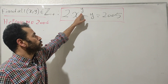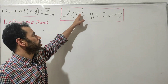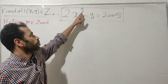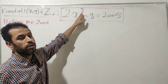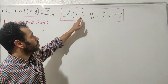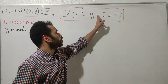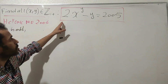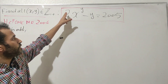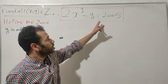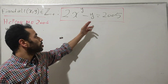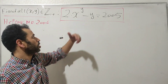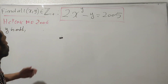Let's take y = 1 as the smallest value for y. If we replace y with 1, we get 2·x − 1 = 2005, so 2·x = 2006, giving x = 1003, which is a very large value compared to y = 1.